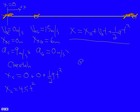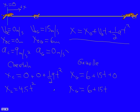We can do the same thing for the gazelle. x gazelle, where the gazelle is at any time in the future, is given by its initial position, which is not zero, he's 6 meters from the origin. His initial velocity is also not zero, it's 15, but his acceleration is zero. The equation is 6 plus 15t.